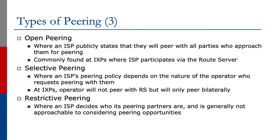There's also open peering, where an ISP publicly states that they will peer with all parties who approach them for peering. This is commonly found at Internet exchange points where the ISP or network operator will participate via the route server. There is selective peering, where an ISP's peering policy depends on the nature of the operator who requests peering — at IXPs the operator will not generally peer with the route server but will only peer bilaterally. Finally, there is restrictive peering, where an ISP decides who its peering partners are and is generally not approachable to considering peering opportunities.